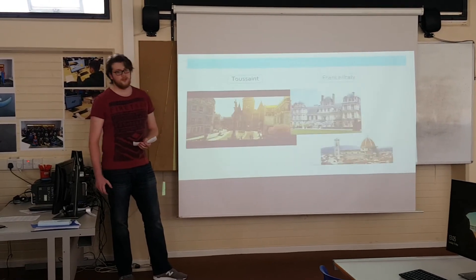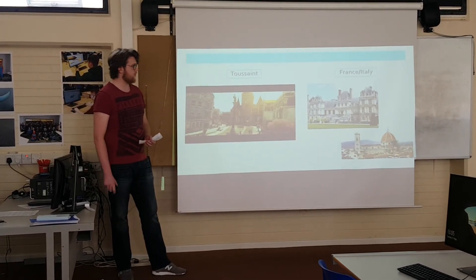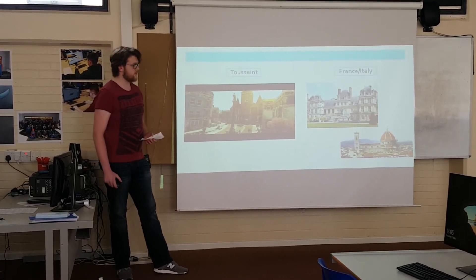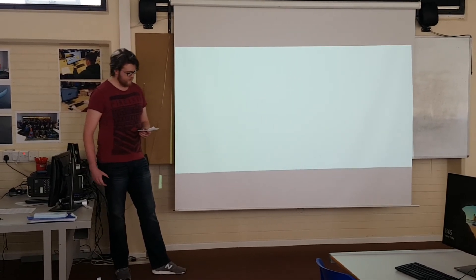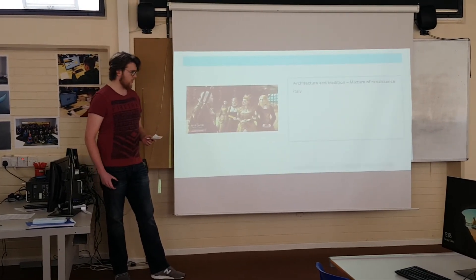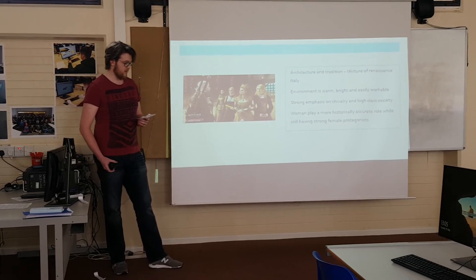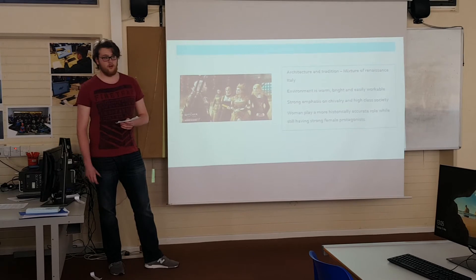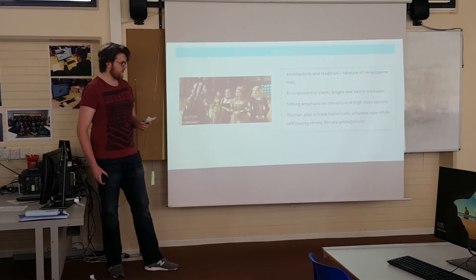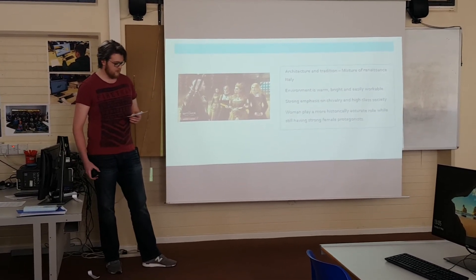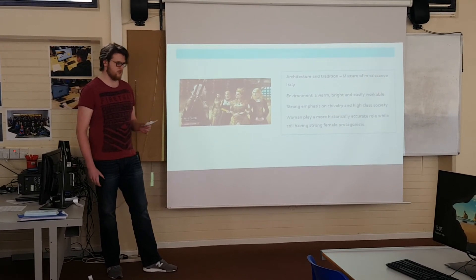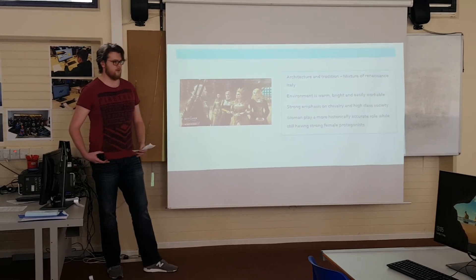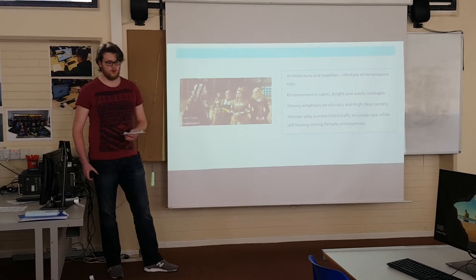The next place, Toussaint, is quite different, with influences coming primarily from Italy and France during the Renaissance period. While it is the furthest from realism, it's an exaggerated hybrid of the two cultures, with a big focus on the common denominator of wine. It provides a picturesque landscape with bright fabric colours and beautiful weather, compared to the drizzly weather of Skellige, emphasising the luxurious lifestyle associated with those two cultures.